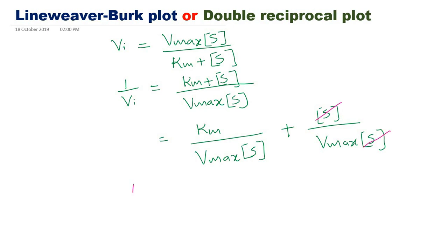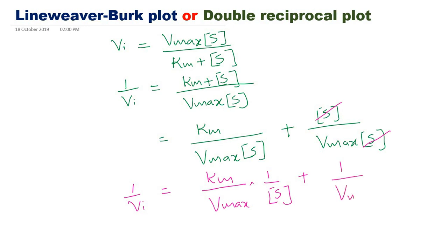So 1 over velocity equals (Km over Vmax) times (1 over substrate concentration), plus 1 over Vmax. By plotting 1 over velocity against 1 over substrate concentration, we get a linear equation — that is the double reciprocal plot, derived by taking the reciprocal of the Michaelis-Menten equation.